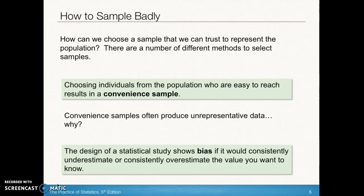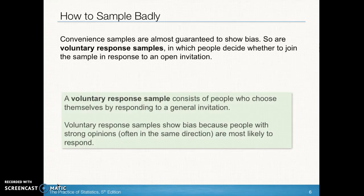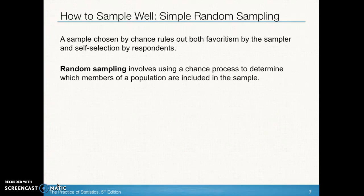You may want to pause the video to take notes. Another thing we don't want to do is voluntary response. With voluntary response, we throw a question out there — on the radio, television, or an online survey — and ask people to call in, write in, or fill out the survey. What we find is the data ends up biased because the only people who voluntarily respond are those with super strong opinions. This produces very one-sided results, and we want our survey results to be representative of the entire population, not just one segment of it.